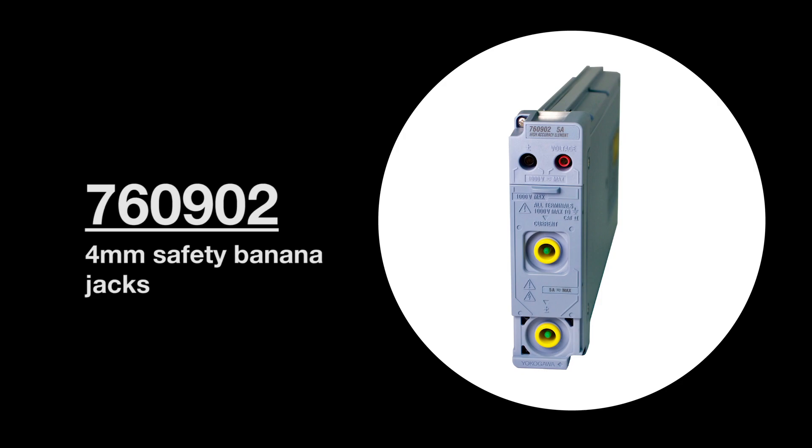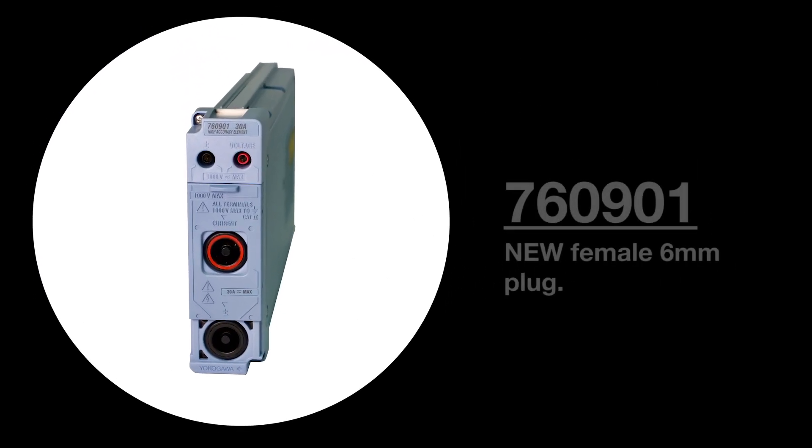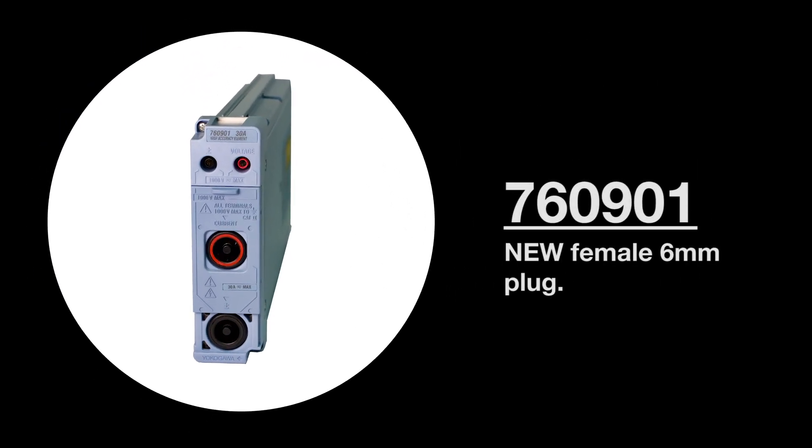The 760902 5 amp elements use 4 millimeter safety banana jacks for current measurement. However, the 760901 30 amp elements use a new female 6 millimeter plug for current measurements.